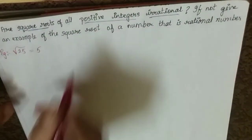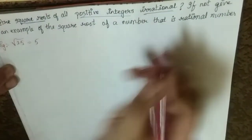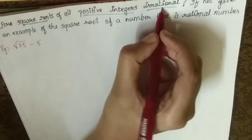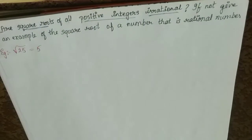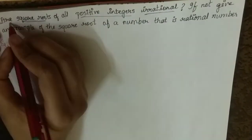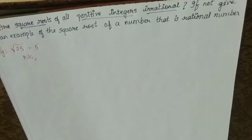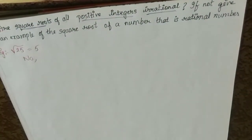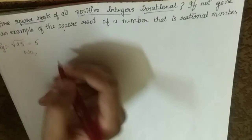So first we have to write one statement. We have understood, right? Irrational means which is not rational. If not, give an example of square root of a number that is rational. Now let's write a sentence. No, because all positive integers' square roots are not irrational. Some are rational, but some are irrational.